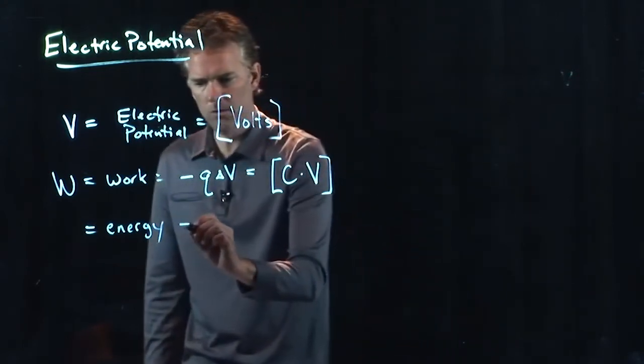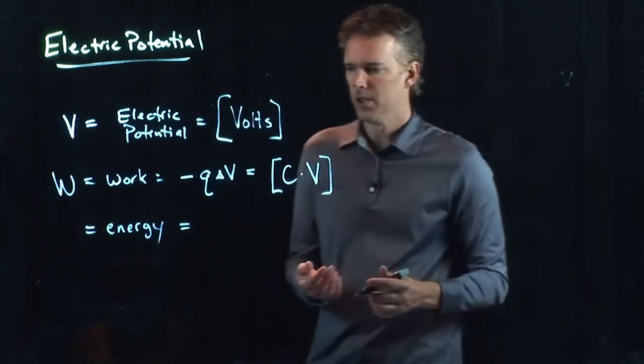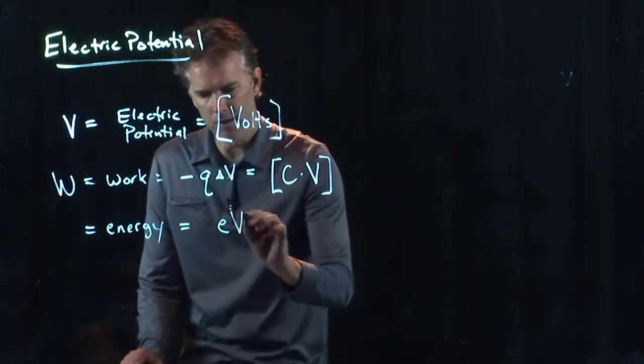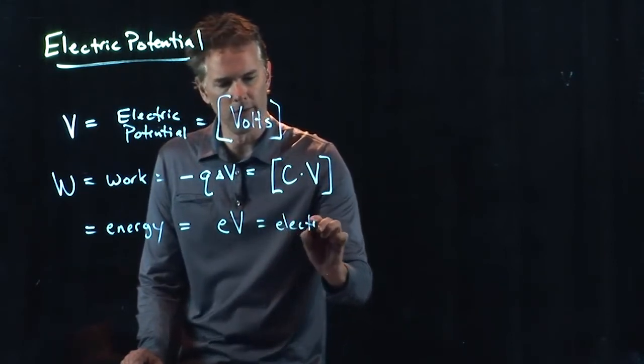But Q, you don't have to write in coulombs. There's another way to write it, which is E times V, and this is electron volts.